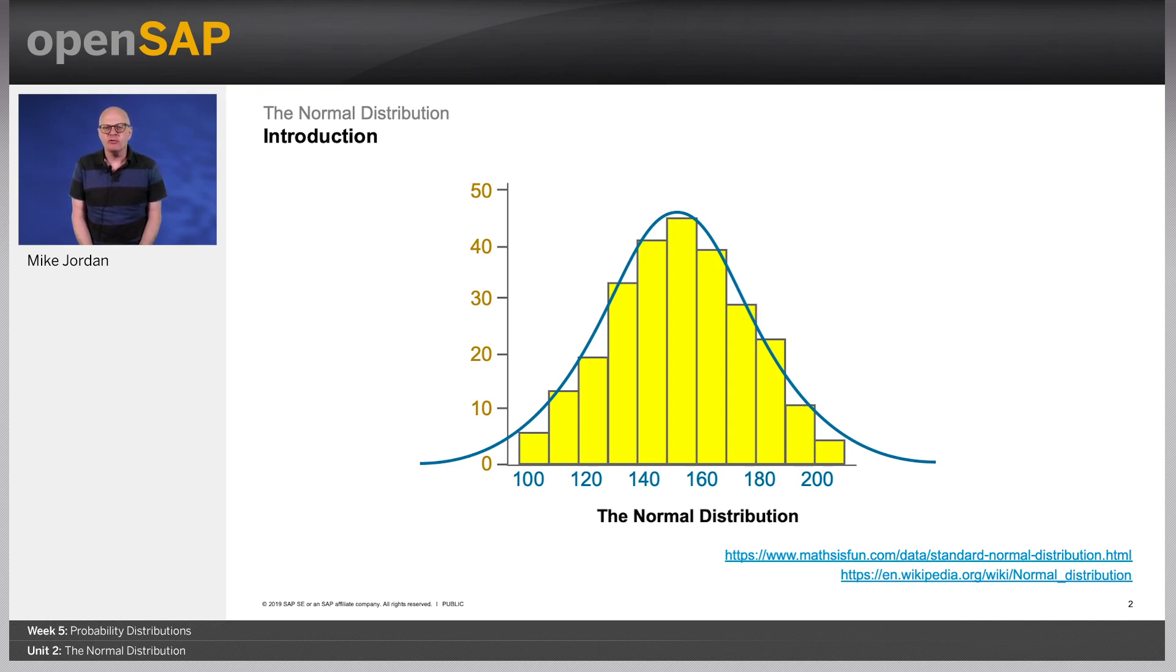The normal distribution is often called a bell curve because it looks like a bell, or referred to as the Gaussian or Gauss Laplace distribution. It's a very common continuous probability distribution. In the slide, you can see an example where the yellow histogram shows some data that follows the normal distribution, not perfectly but closely. Normal distributions are important in statistics and are often used in the natural and social sciences to represent real valued random variables whose distributions are not known.